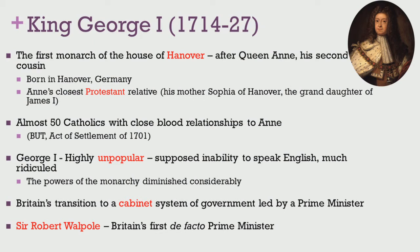Taking a look at the monarchs who were ruling during this time, after Queen Anne, it was King George I who ascended the throne of England. He was the first monarch of the house of Hanover. Queen Anne belonged to the house of Stuarts and was incidentally King George I's second cousin. George was born in Hanover in Germany and was the closest living Protestant royal relative of Anne, because his mother Sophia of Hanover was a granddaughter of James I who ruled over England in the beginning of the 17th century.